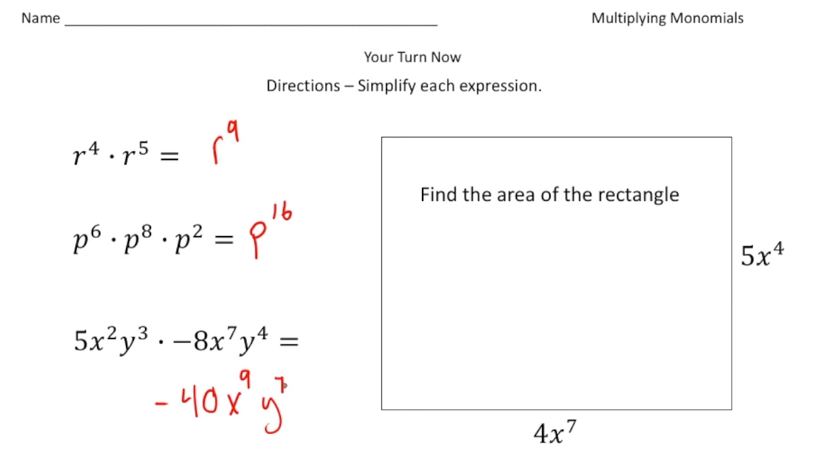And this one, again we want to find the area of the rectangle. Area equals length times width. We know our length is 4x to the seventh, and we know our width is 5x to the fourth. So 4 times 5 gives you 20, and then x to the seventh times x to the fourth gives you x to the eleventh. And there it is. How'd you do? We'll see you next time.